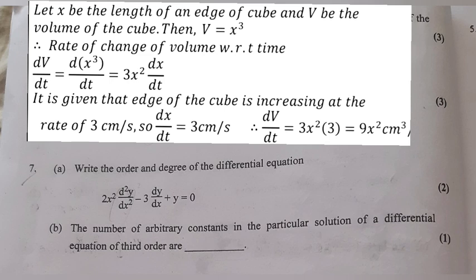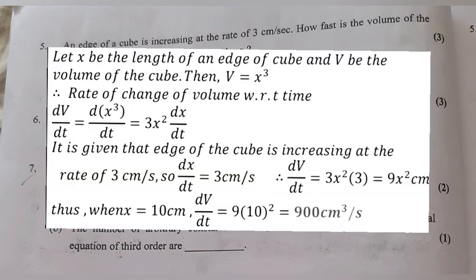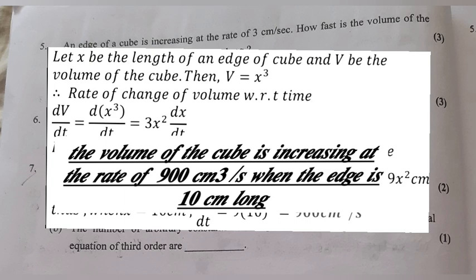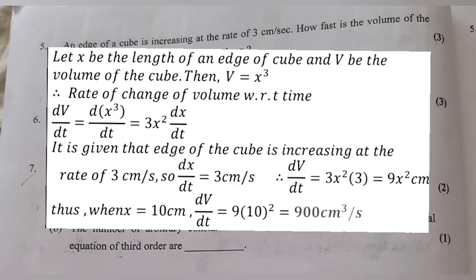It is given that the edge is increasing at the rate of 3 cm per second, so dx/dt = 3 cm/s. Therefore dV/dt = 3x² × 3 = 9x² cm³/s. When x = 10 cm, dV/dt = 9 × 100 = 900 cm³/s. The volume is increasing at 900 cm³ per second when the edge is 10 cm long.